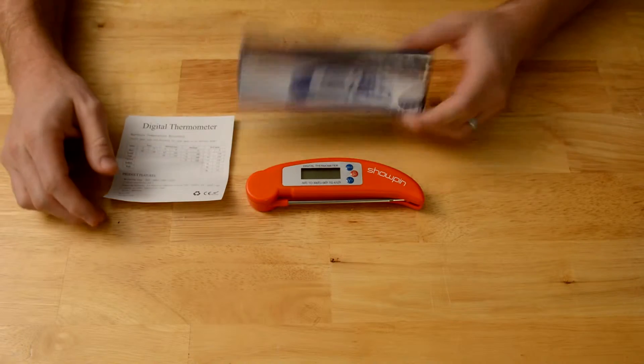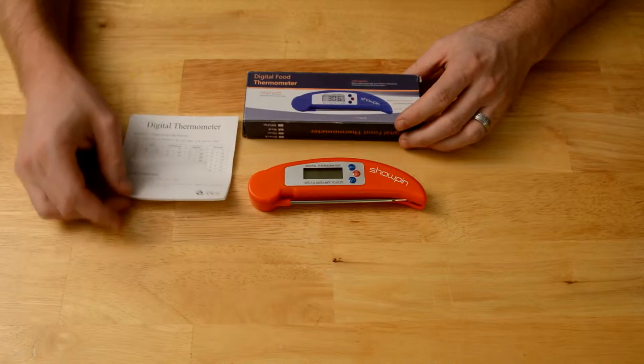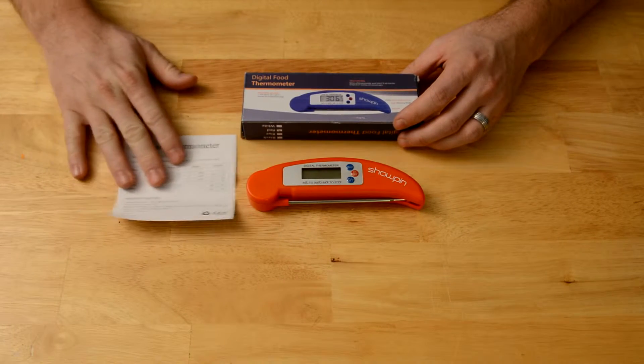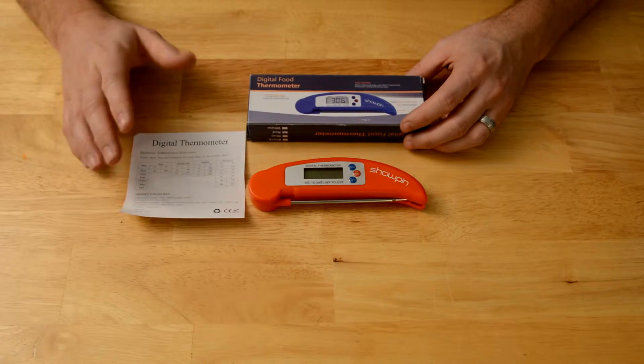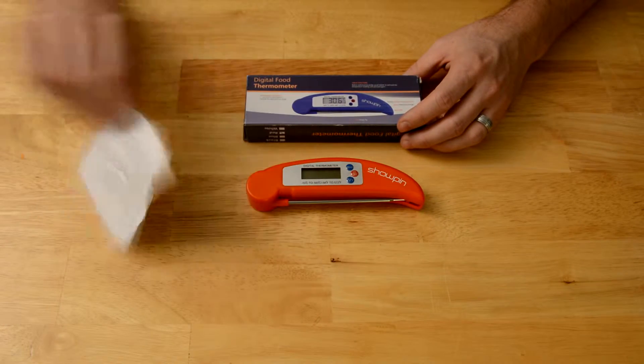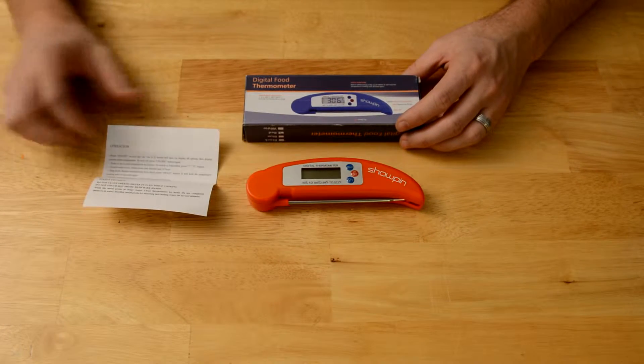It comes in this box. The box kind of looks cheap, but it works. We've got a little guide here on what temperatures your meat should be. And a little bit about how you use it. It's pretty self-explanatory though.